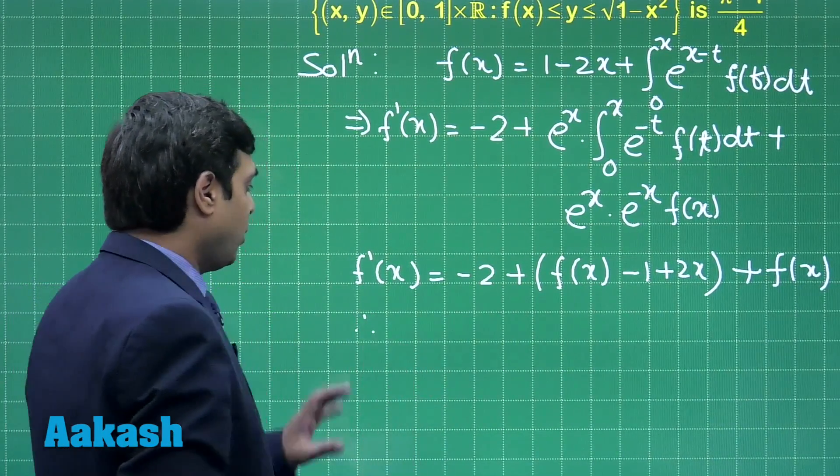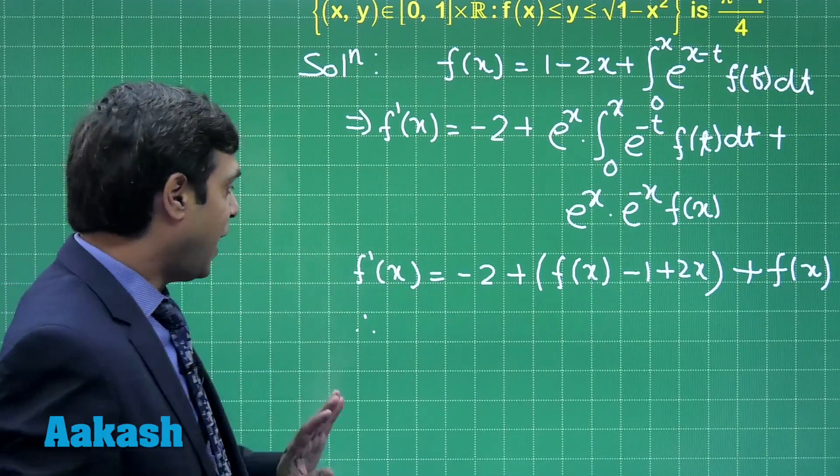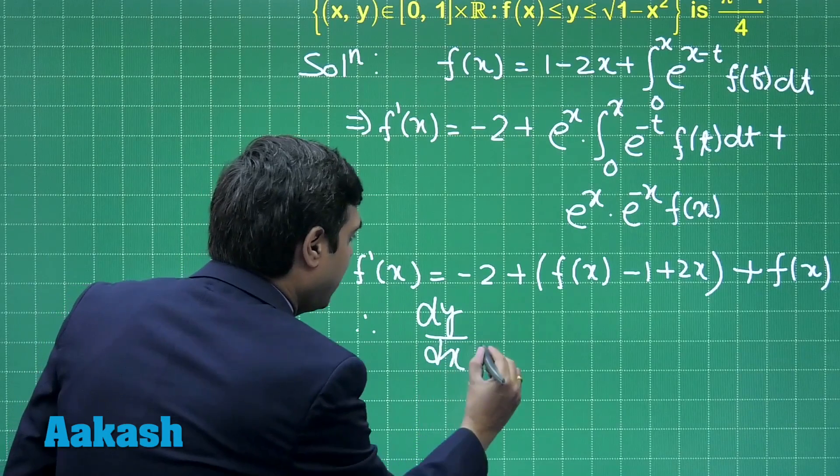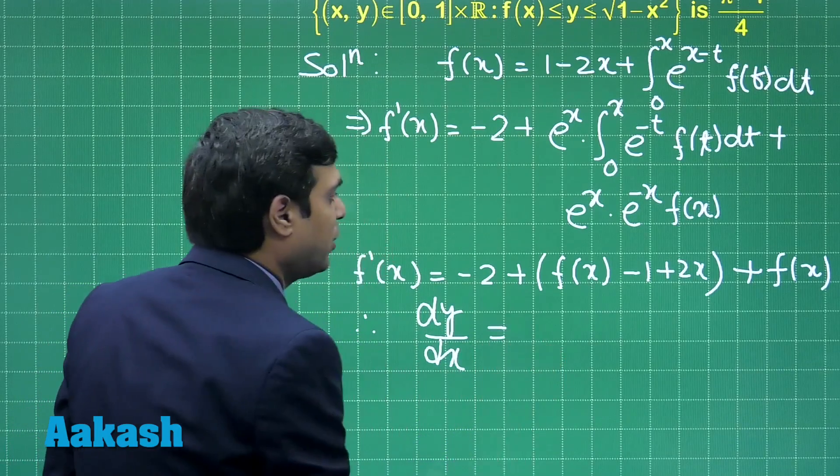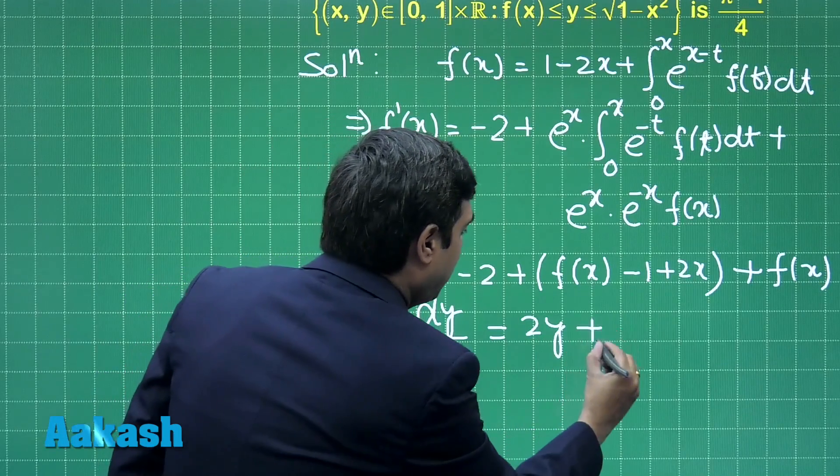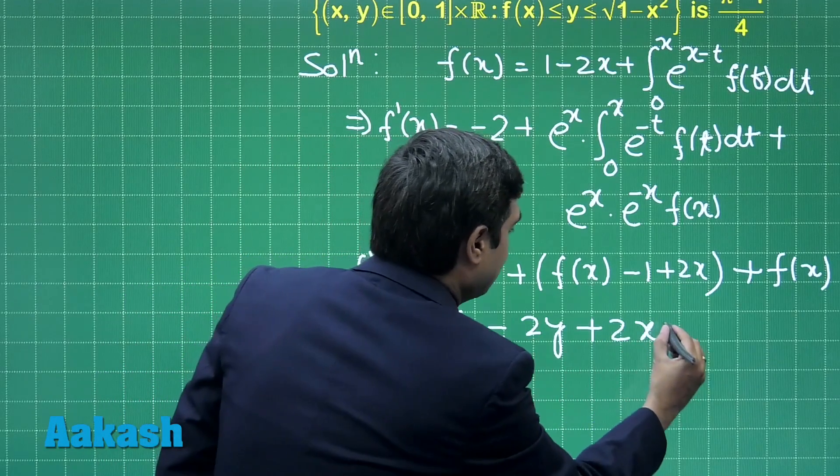Simplifying, instead of writing f(x), let us use y so that I can see it clearly as the differential equation: dy/dx is equal to 2y plus 2x minus 3.